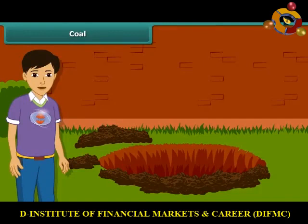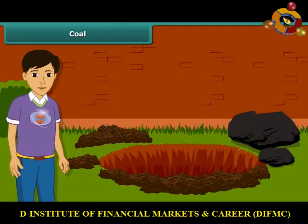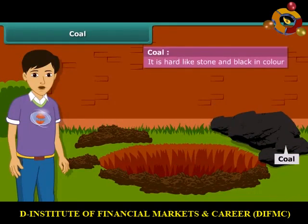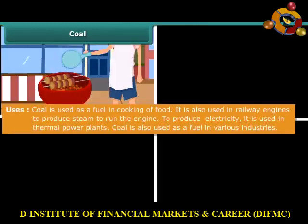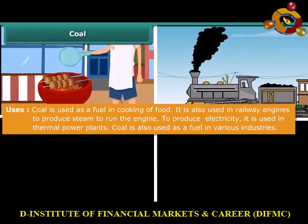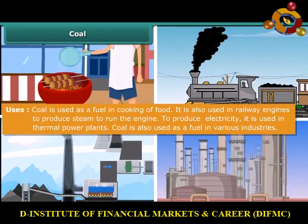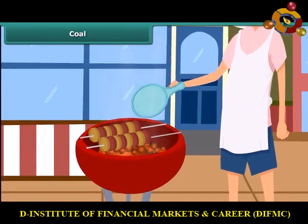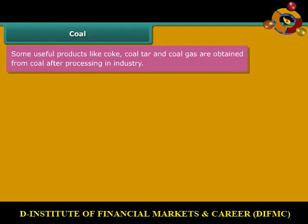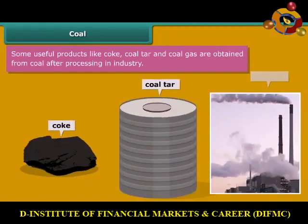Now let us know about these fossil fuels in detail. Let us start with coal. You may have seen coal in your surrounding. It is hard and black in color. Coal is used for a variety of purposes such as cooking food, running railway engines, thermal plants, and various industries. After heating in air, it starts burning and produces carbon dioxide gas. Some useful by-products of coal like coke, coal tar, and coal gas are obtained directly from coal.